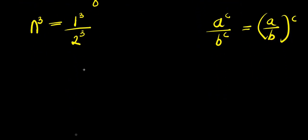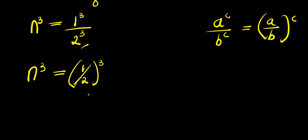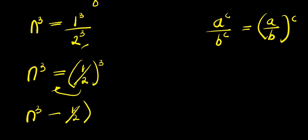Applying that rule here, n cubed equals 1 divided by 2, raised to the power of 3. Moving that over, n cubed minus 1 divided by 2, raised to the power of 3, equals 0.